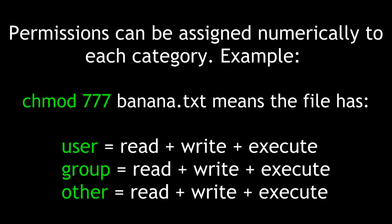Permissions can be assigned numerically to each category. For example, chmod 777 banana.txt means that this text file has all permissions for user — read (4), write (2), and execute (1), or 4 plus 2 plus 1 equals 7. The same applies for group and other, giving all permissions: 7, 7, 7.